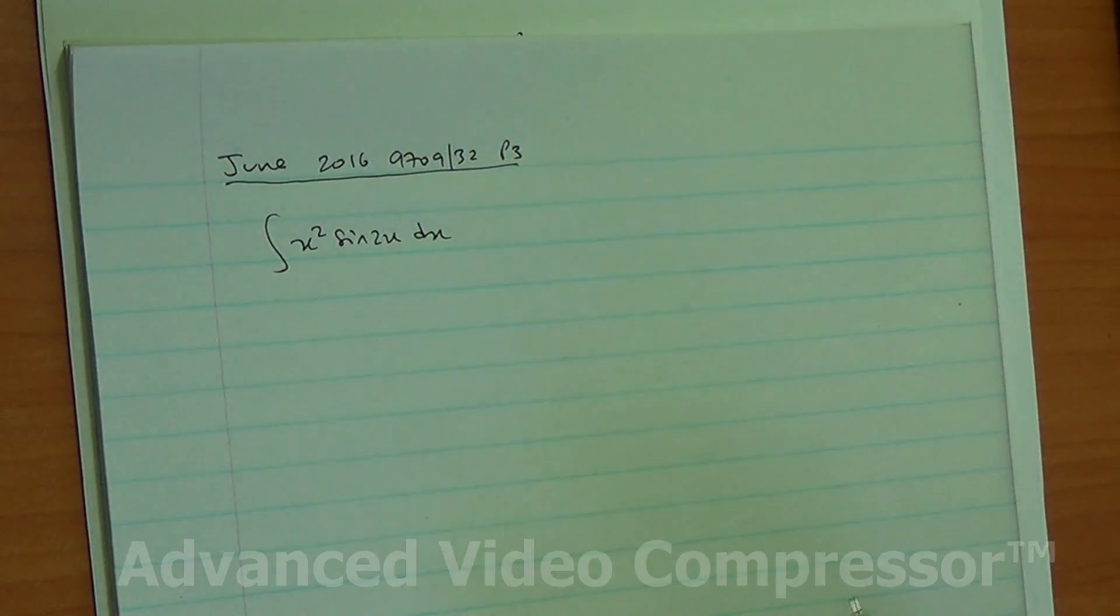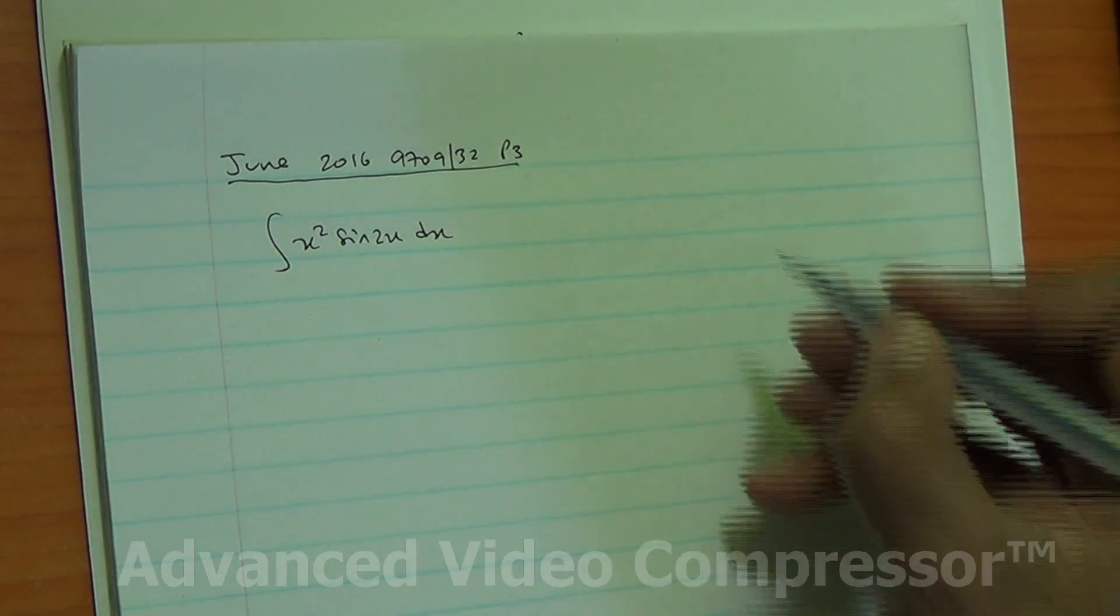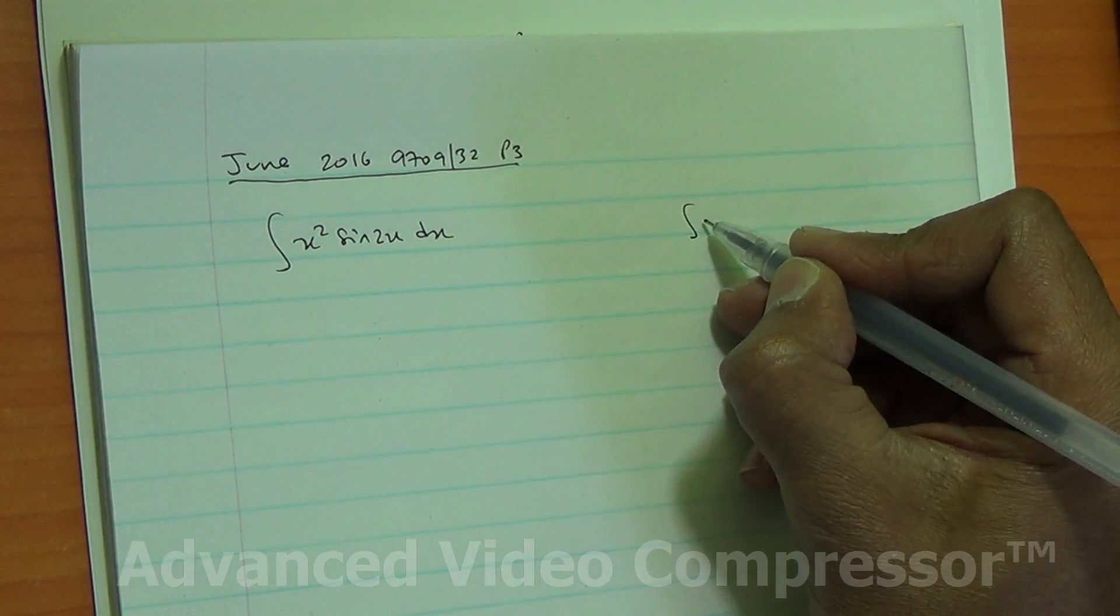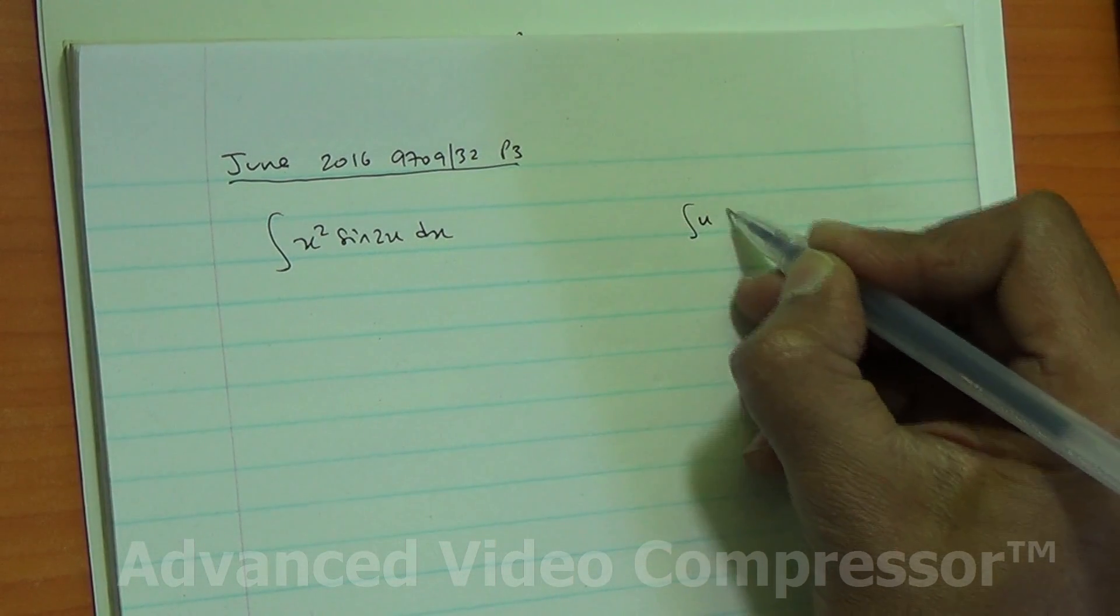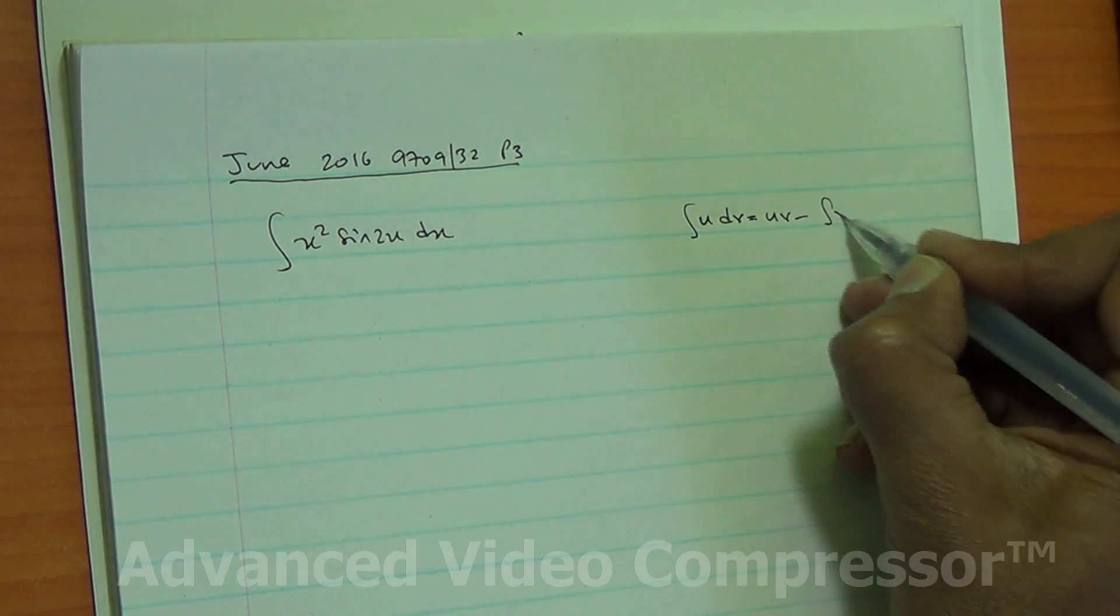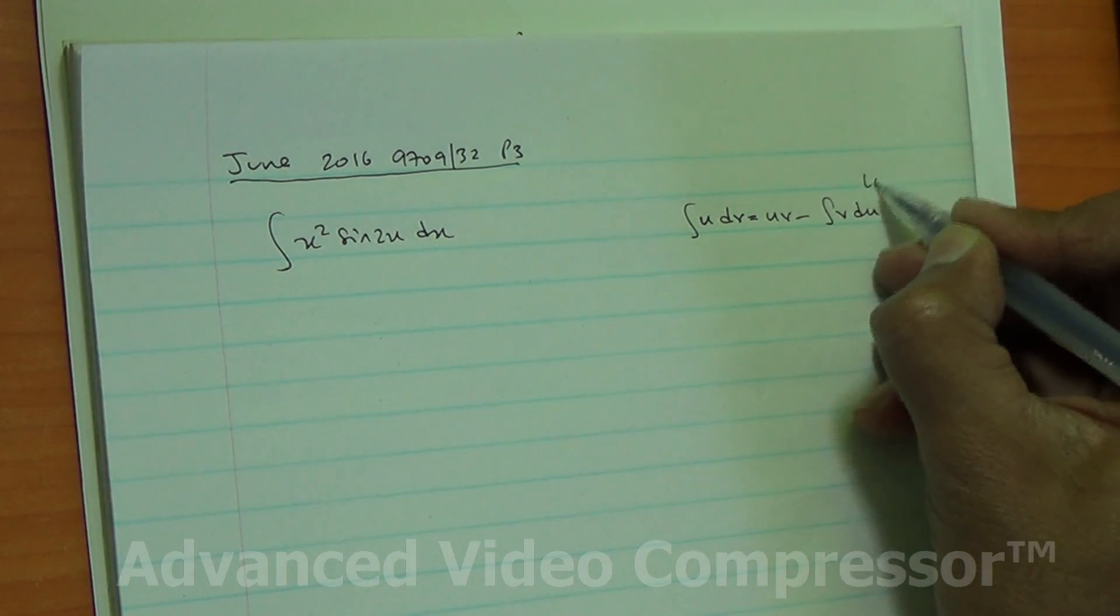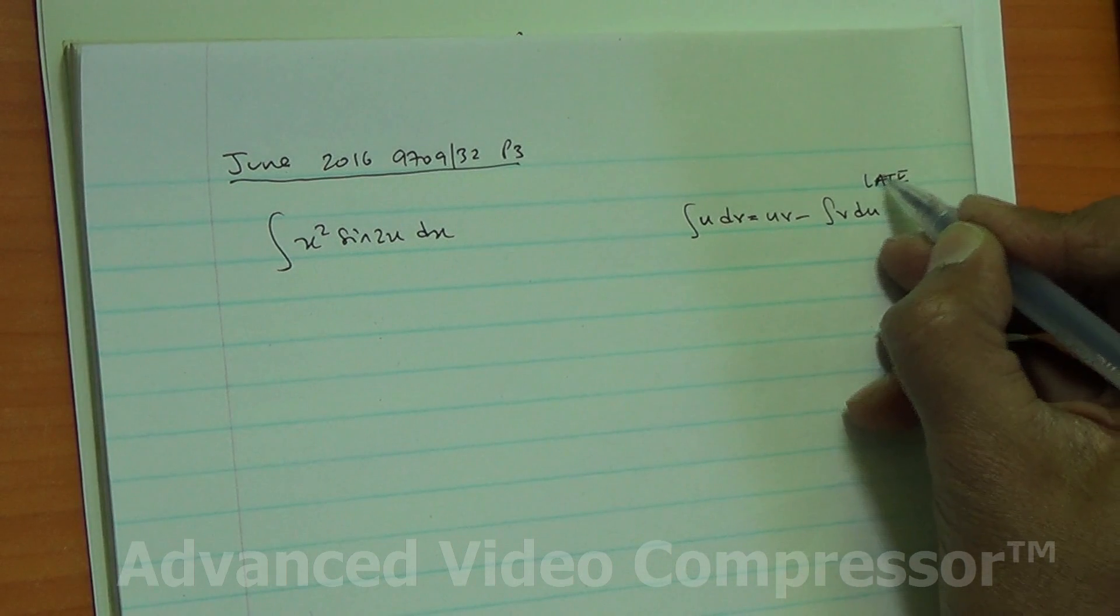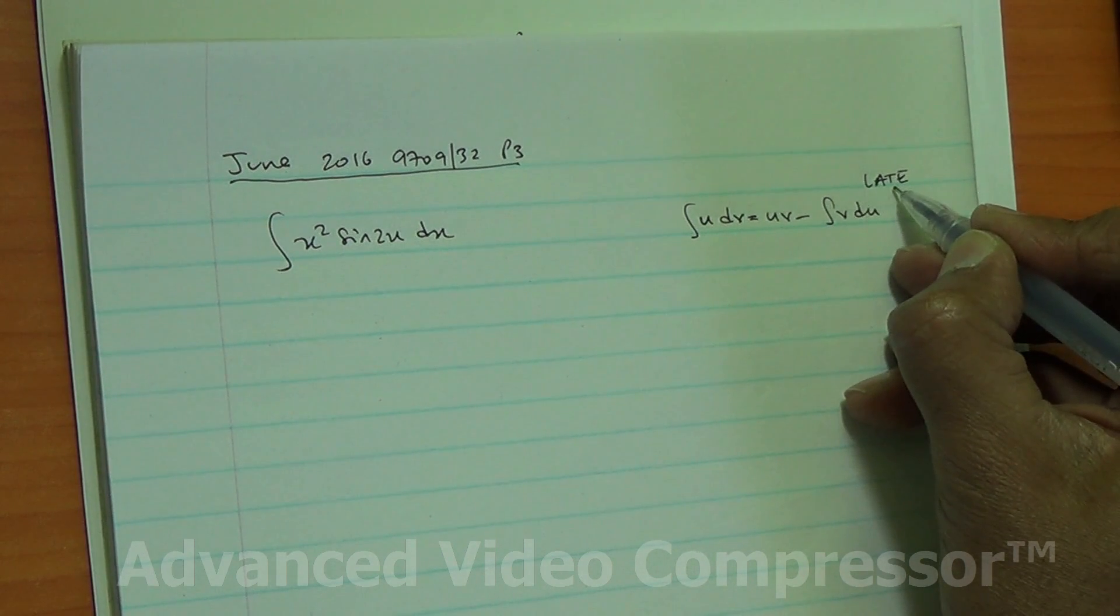So we have to integrate by parts here, using integration of u dv is equal to uv minus integral of v du, and using LATE as well, which means the algebraic is first and trigonometric is afterwards.